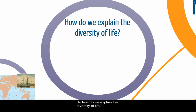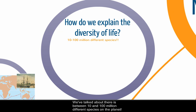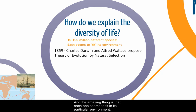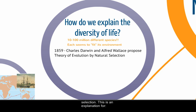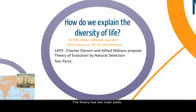So how do we explain the diversity of life? This is one of the questions humans have always had. As we look around and see different plants and animals, how do we explain where all that came from? There are between 10 and 100 million different species on the planet — how do we get all those? The amazing thing is that each one seems to fit in its particular environment. In 1859, Charles Darwin and Alfred Wallace proposed the theory of evolution by natural selection as an explanation for the diversity of life and where it all came from.